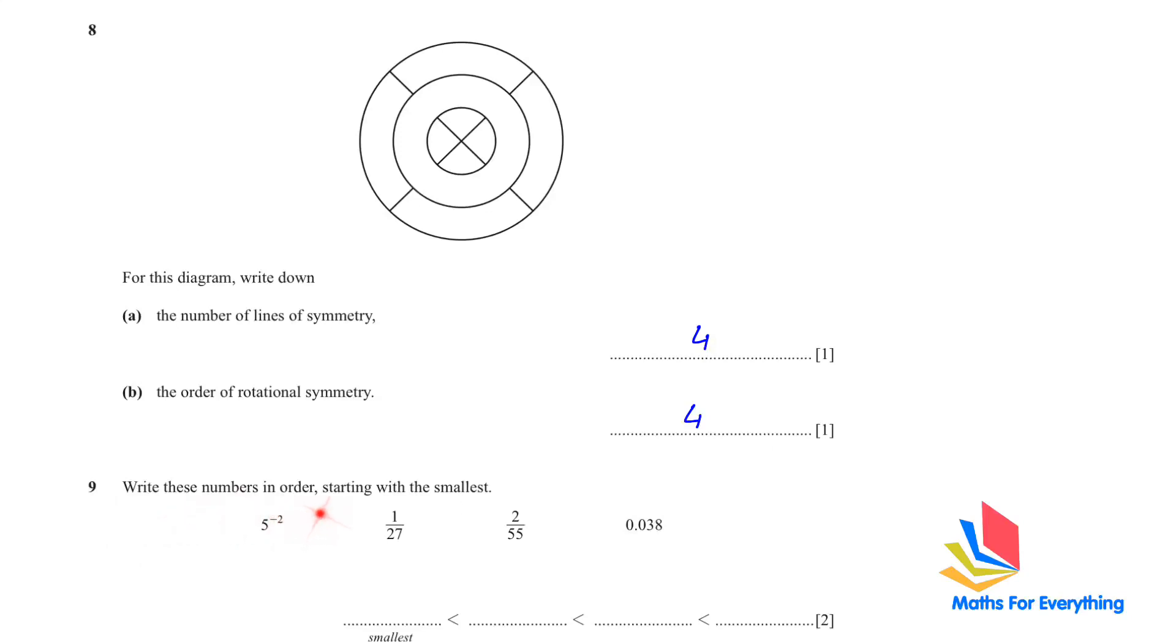Question number 9. Write these numbers in order starting with the smallest. When you have a question like this, write down the decimal form of the numbers which are in fractions or which are in the exponential form. So this will be 0.04, 0.037, 0.0363. And now write from the smallest to the bigger number. As you can see that this is the smallest number, 0.0363. Do not write in the decimal form. Write in the form which is given in the question, which is 2 over 55. And the second smallest is 0.037, which is 1 over 27. Then we have 0.038, and then 0.04, which is 5 to the power of negative 2.